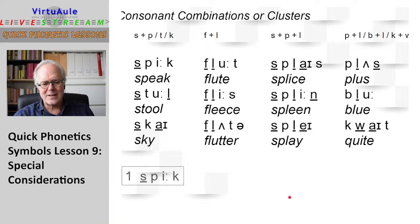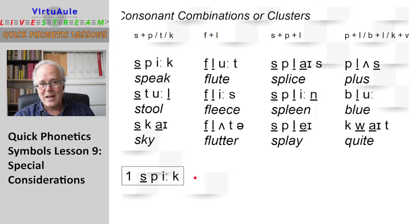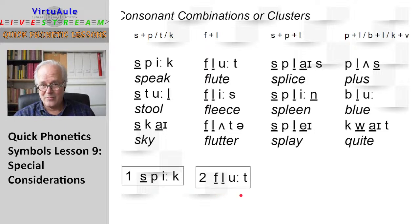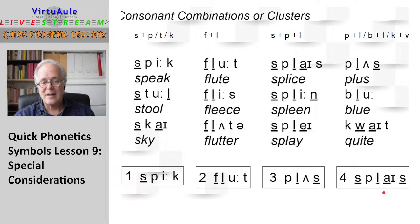Now we're going to do a speaking exercise. I'm going to give you the phonetic word — the phonetic representation — and I want you to try to read it. You read it, and then I will correct it, so you listen to me after and decide if your sound matches. Go ahead and read. Speak. Okay, was it similar? Next one — read — flute. Next one — read — and the last one — splice. I hope you were good with that.